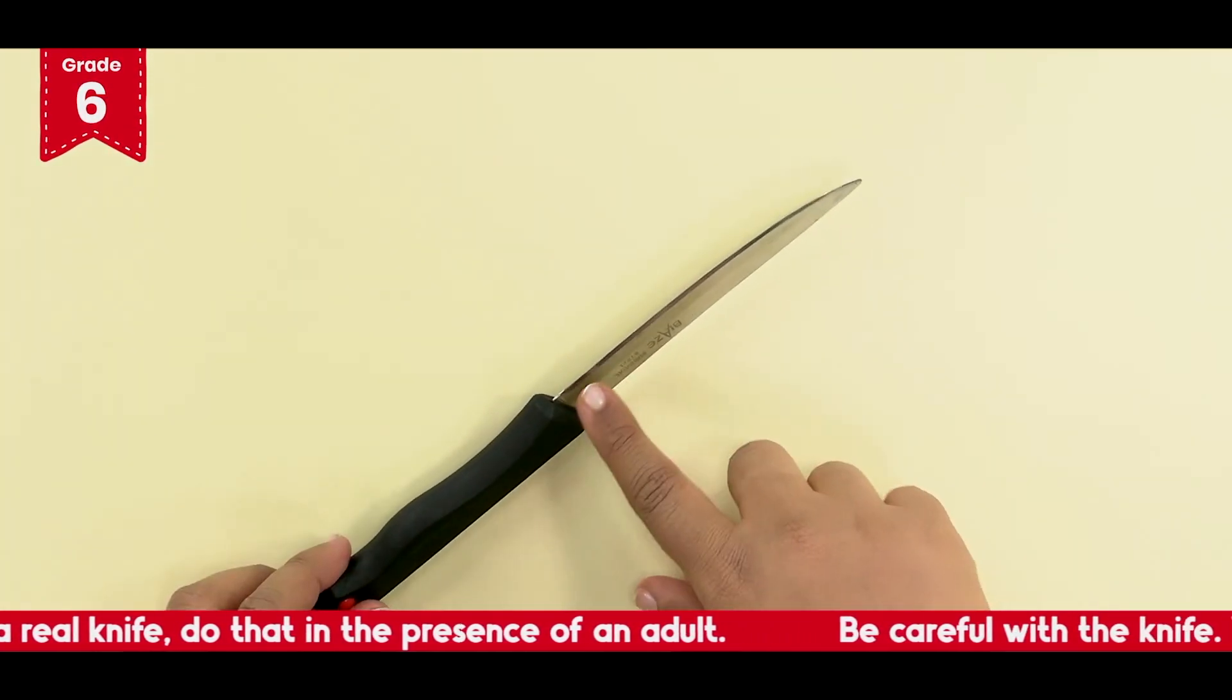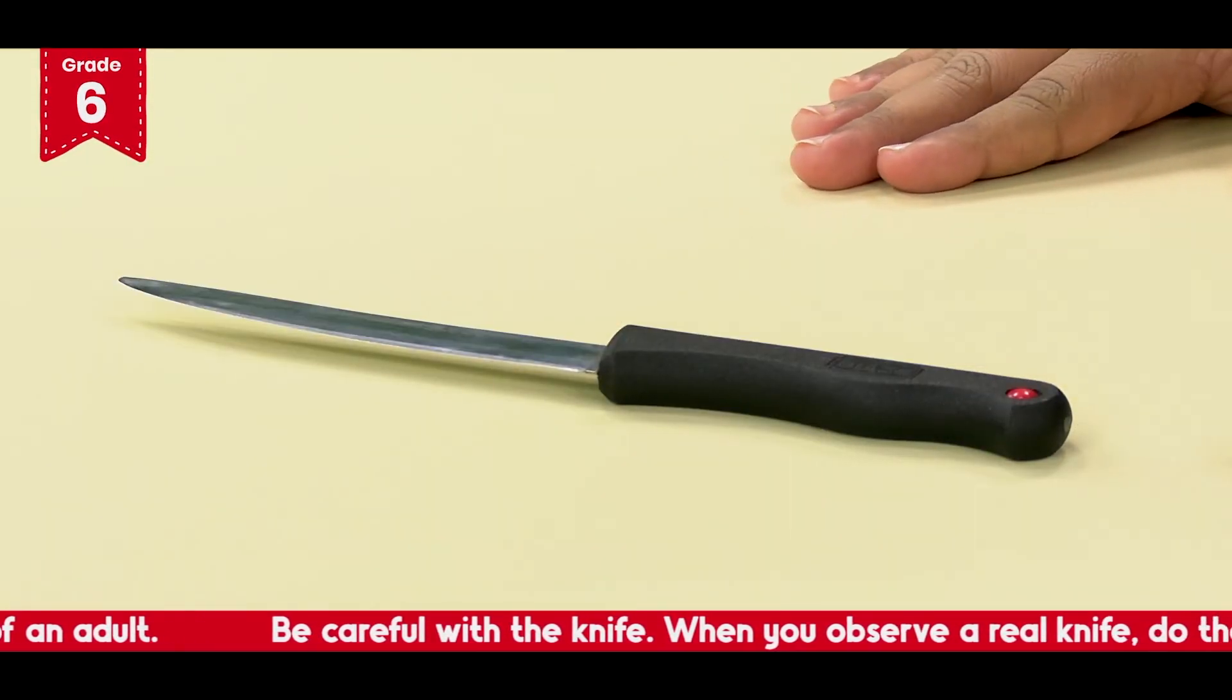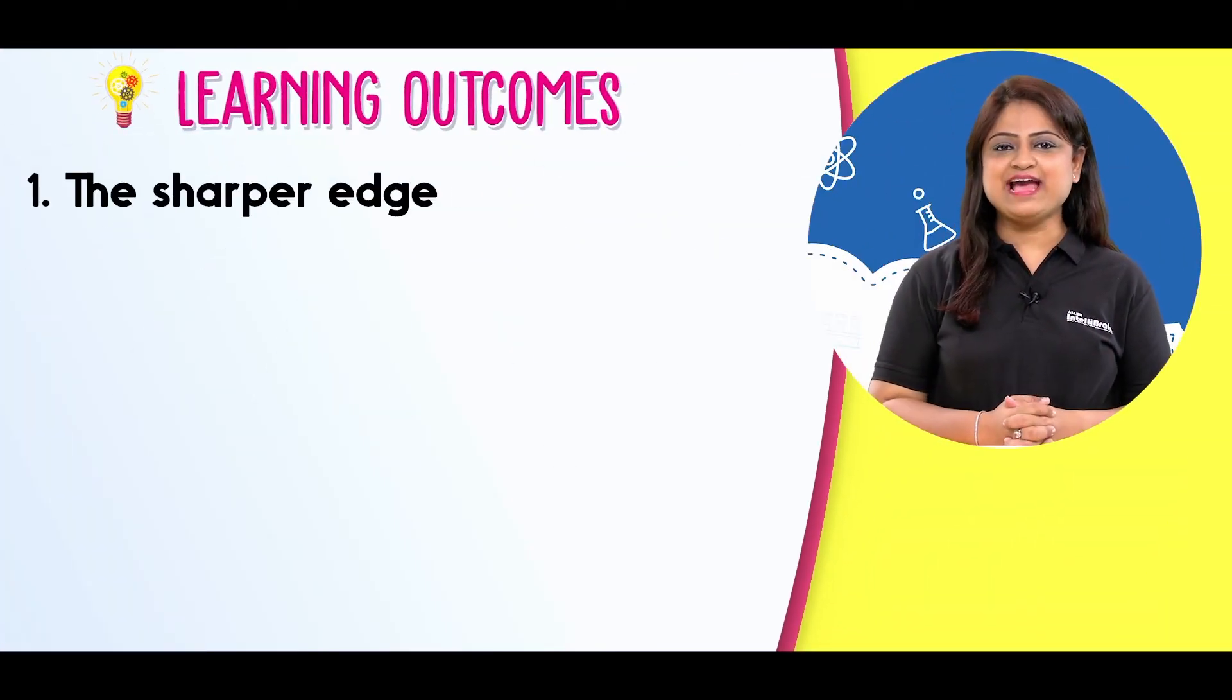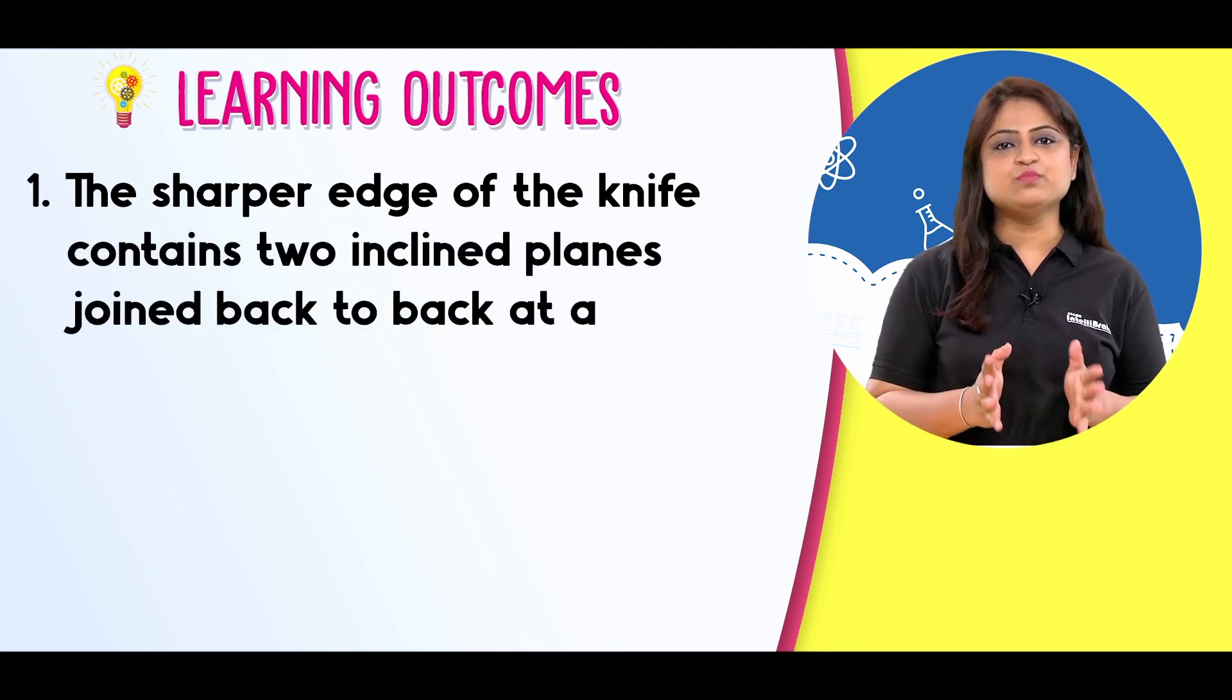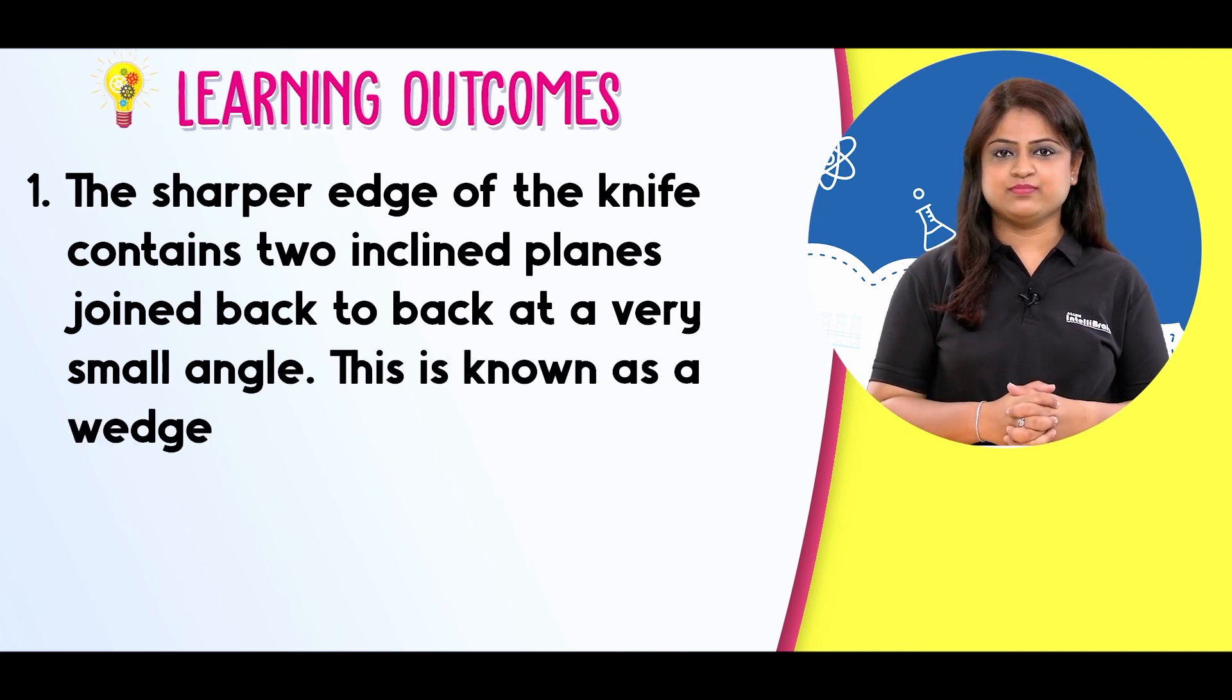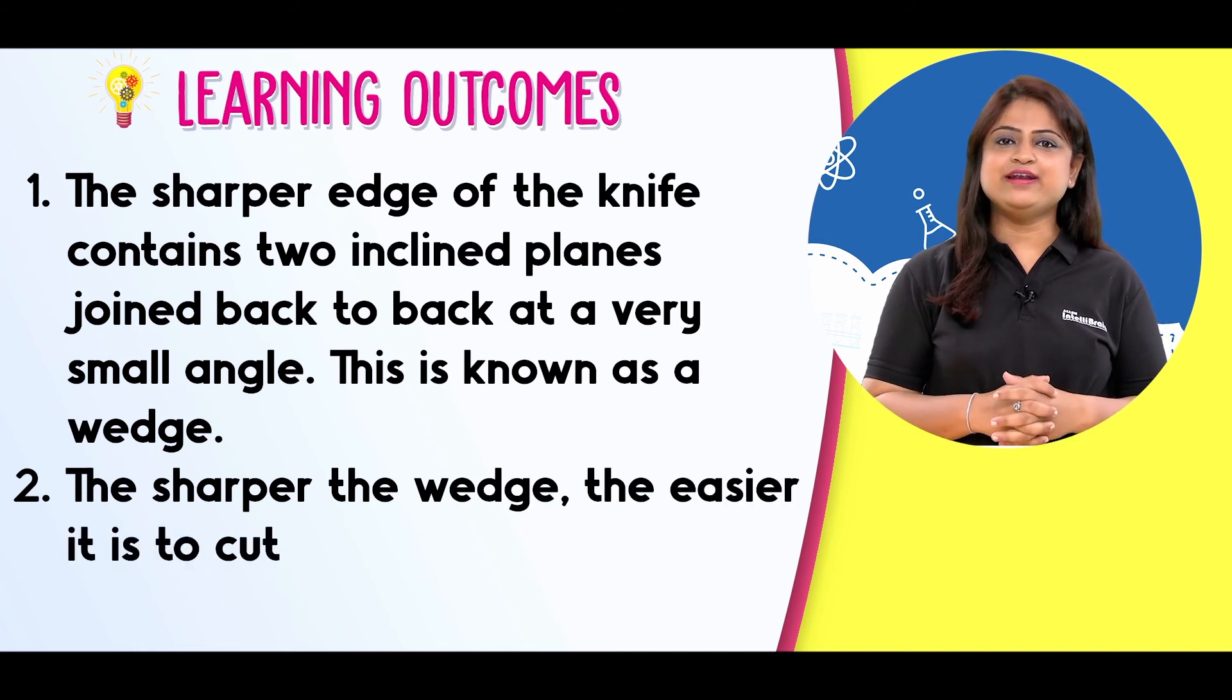Most of the cutting tools are designed like a wedge and that's why the sharper the tool, the easier it is to cut things using them. The sharper edge of the knife contains two inclined planes joined back to back at a very small angle. This is known as a wedge. The sharper the wedge, the easier it is to cut different objects.